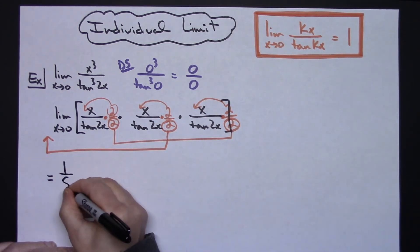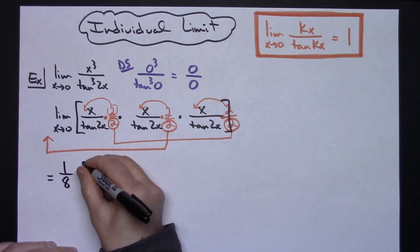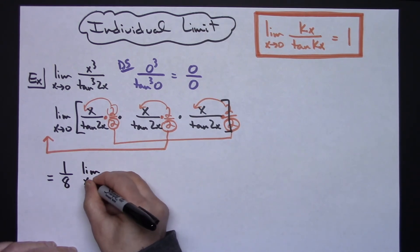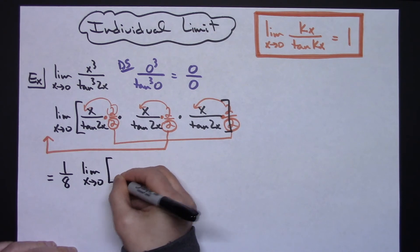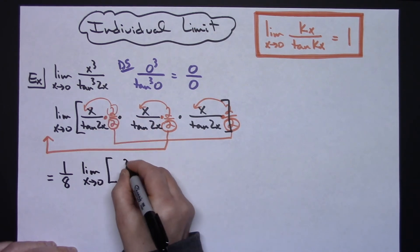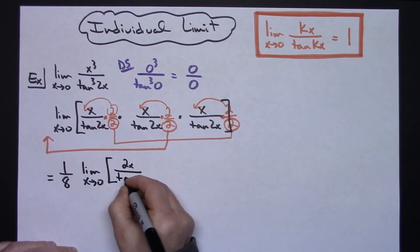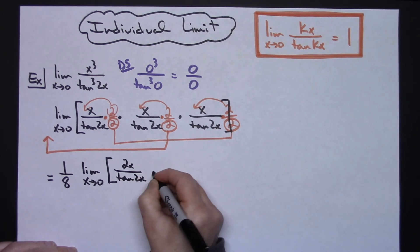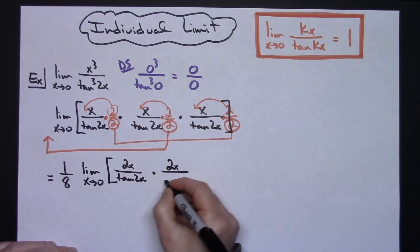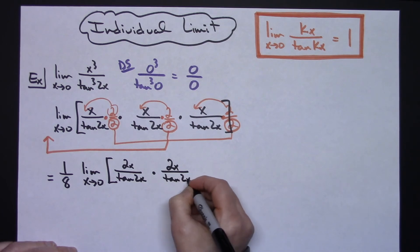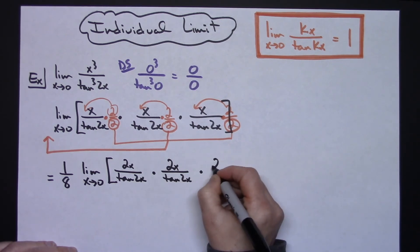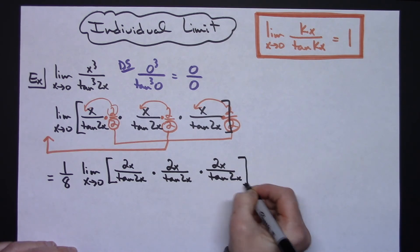So then I'm going to have a 1/8 on the outside times the limit as x approaches zero of, because that 2 is there now, 2x over the tangent of 2x times, same thing with the middle one, 2x over the tangent of 2x. And then on the last one, 2x over the tangent of 2x.